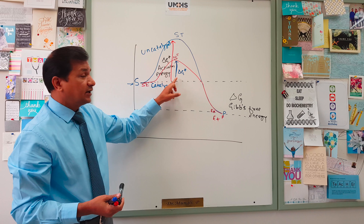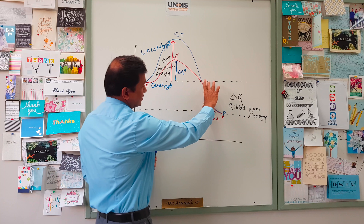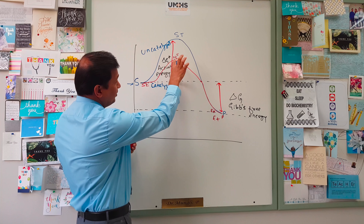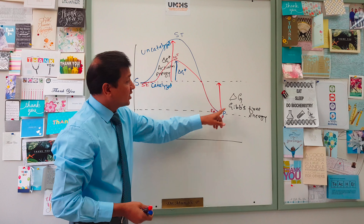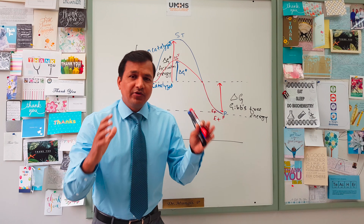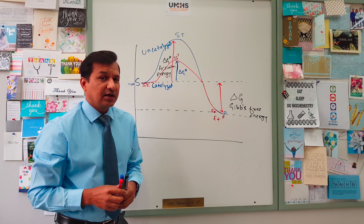The enzyme comes out of the reaction unaltered. This is exactly what enzymes do — they enhance the rate of reaction. Now look at delta G, the Gibbs free energy of the reaction. Whether it is a catalyzed or uncatalyzed reaction, delta G remains the same. Delta G does not change whether it is an enzyme-catalyzed or uncatalyzed reaction — both end at the same point. What enzymes do is bring down the activation energy, delta G++, but they do not change delta G, the free energy or Gibbs free energy of the reaction.